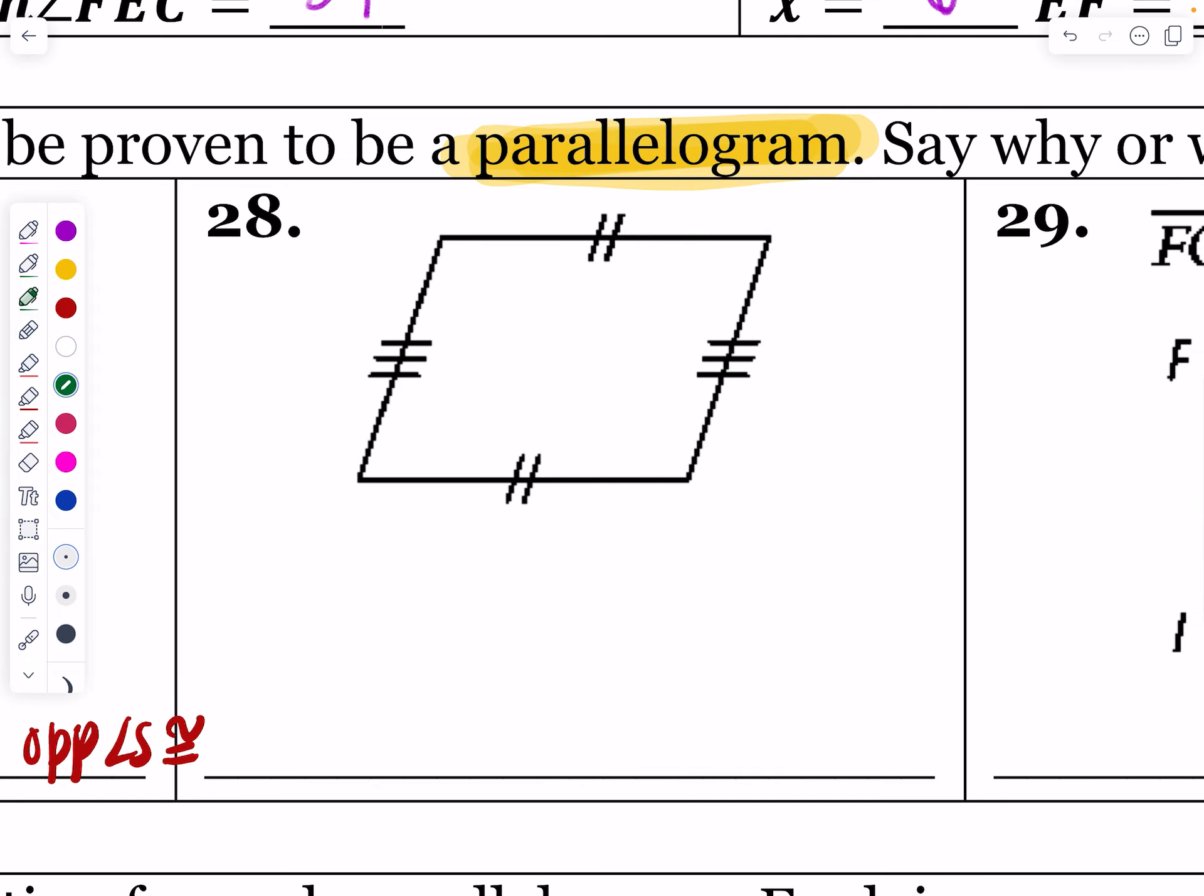What about number 28? Number 28 has one set of opposite sides congruent, another set of opposite sides congruent. Is that a yes or a no? This is going to be a yes. Both pairs of opposite sides are congruent, and so that is in fact a parallelogram.